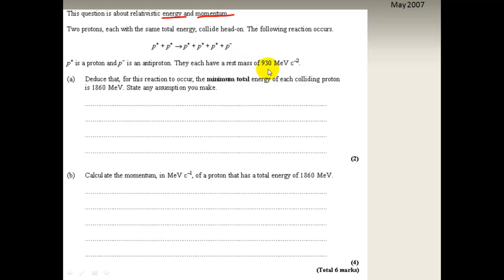We have two particles making four particles. Each one of these has a rest mass of 930 MeV c to the minus two. To deduce that for this reaction to occur, the minimum total energy of these colliding protons is 1860 MeV. What is the total energy? State the assumption that you make.